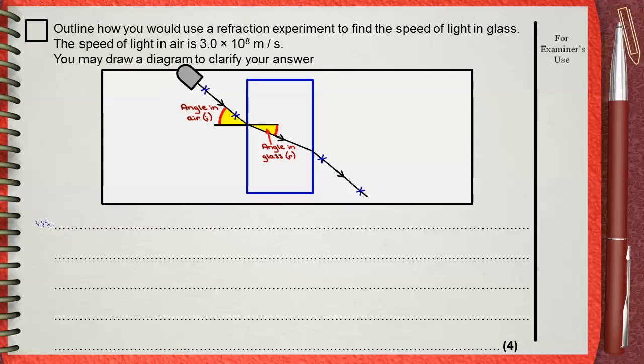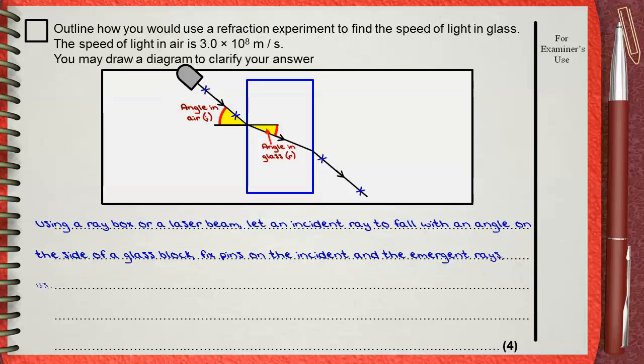Let's explain what we did. Using a ray box or a laser beam, let an incident ray fall with an angle on the side of the glass block. Fix pins on the incident and the emergent rays.